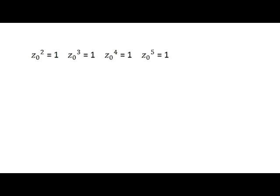We can summarize our results as follows: if complex number z₀ satisfies one of our polynomial equations and its magnitude is equal to 1, then z₀ must be a root of unity of order 2, 3, 4, or 5.